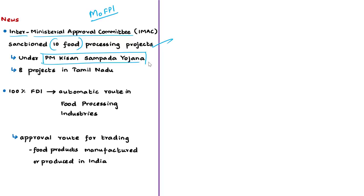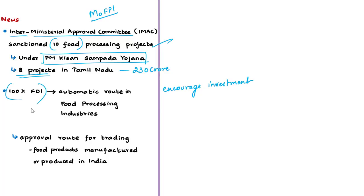Among these projects, eight are in Tamil Nadu spread over eight districts, worth 230 crore rupees. Through the Ministry of Food Processing Industries, the government is encouraging investment in food processing. In India, 100% FDI is permitted under the automatic route in food processing industries, and 100% FDI is also allowed through the approval route for trading including e-commerce in respect of food products manufactured and produced in India.